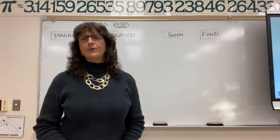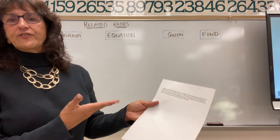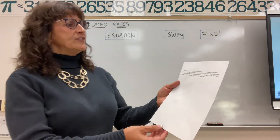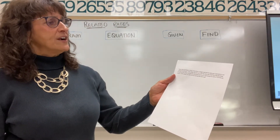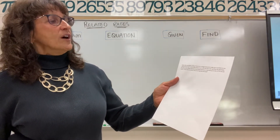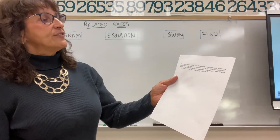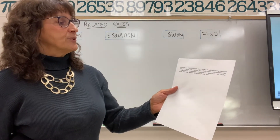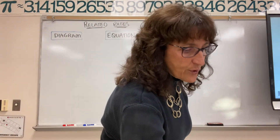I put this related rates problem in the description below, so let's go ahead and read it together. We want to see if this person is going to get a speeding ticket or not. Suppose a patrolman is sitting 50 feet off a straight road and he is pointing his radar gun at a car coming down the road. At the instant the car is 200 feet down the road from the patrolman, the radar says the distance between the patrolman and the car is decreasing at a rate of 100 feet per second. So at this instant, how fast is this car moving down the road?